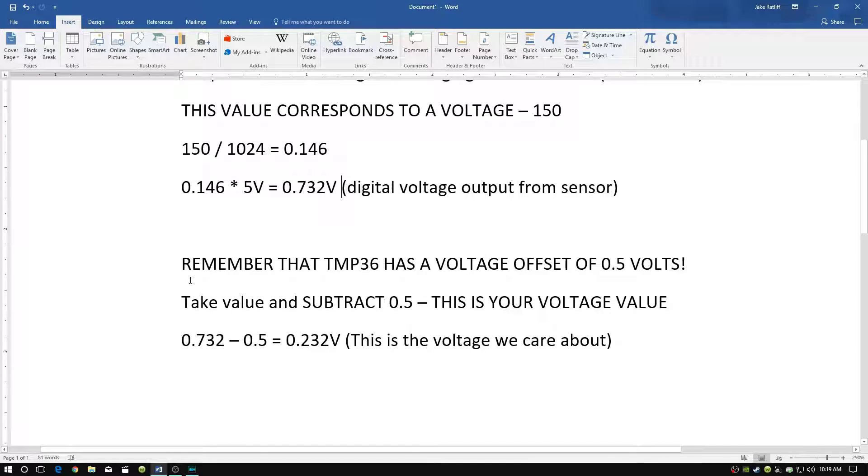Now, the next thing is we have to remember that the TMP-36 temperature sensor has a voltage offset of 0.5 volts. The reason for this is so that the temperature sensor can return to you negative temperatures.